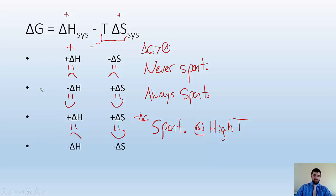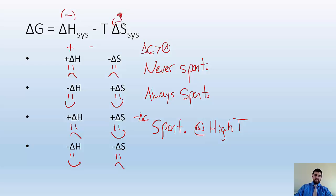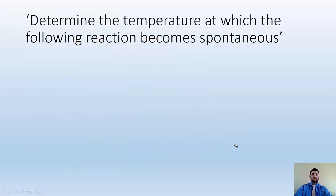And the last scenario: what if I have a negative delta H, which is favored, and a negative delta S, which is unfavored? I have a negative delta H but a negative delta S. So if I'm subtracting a negative, I want that negative to be small so that overall it's still negative. This is going to be spontaneous at low temperatures.